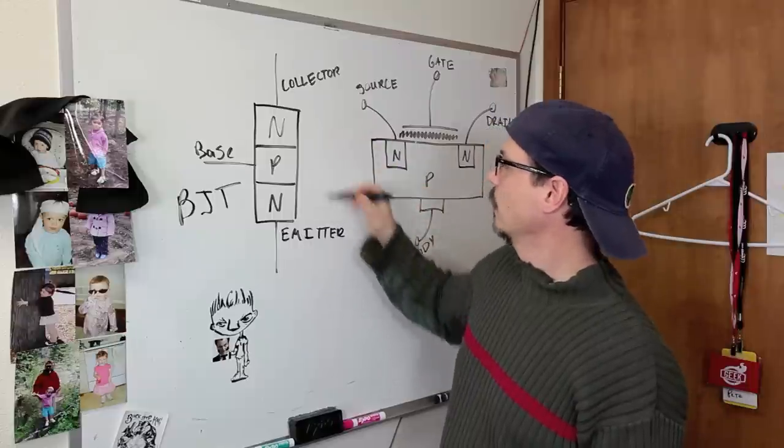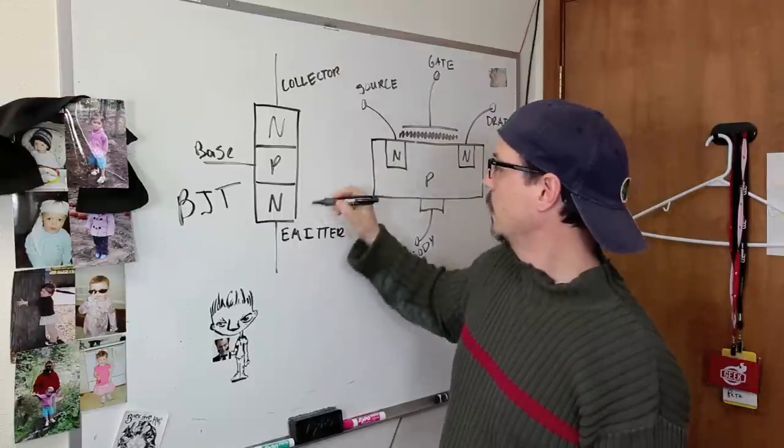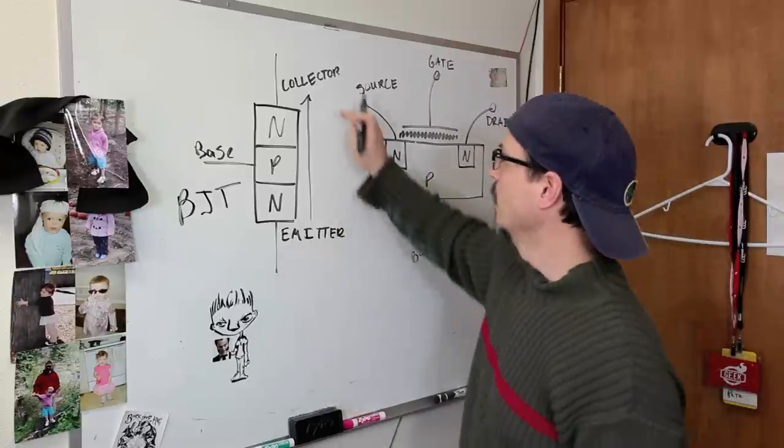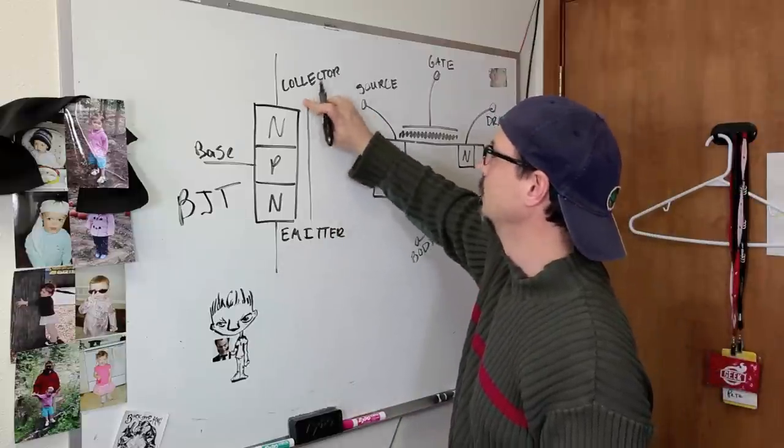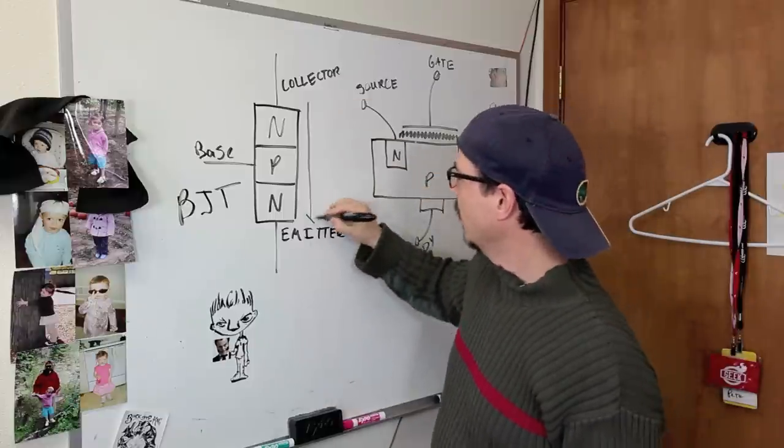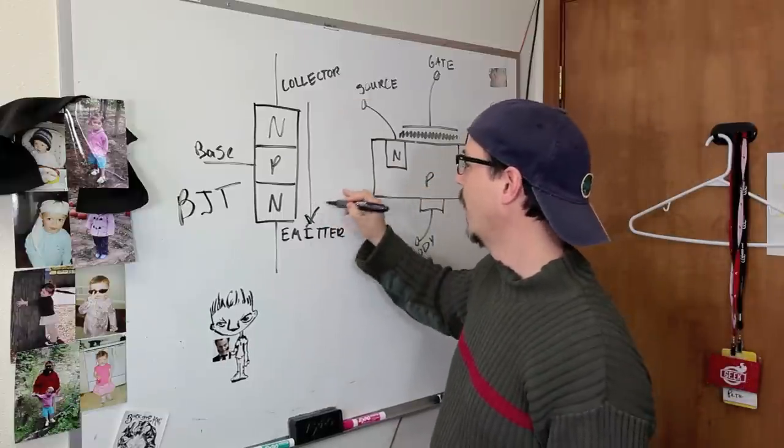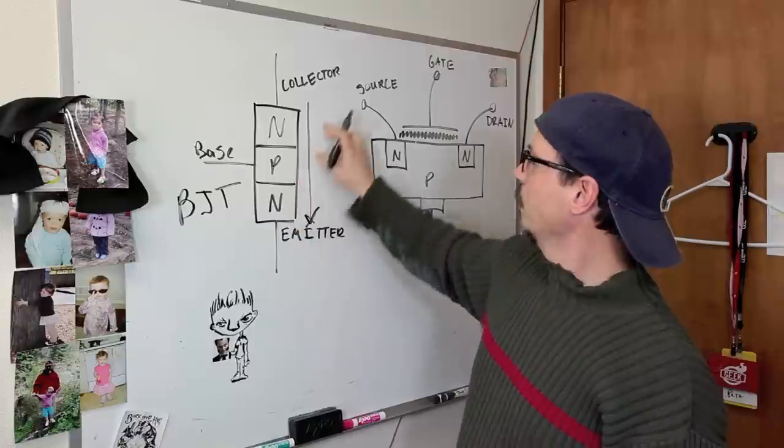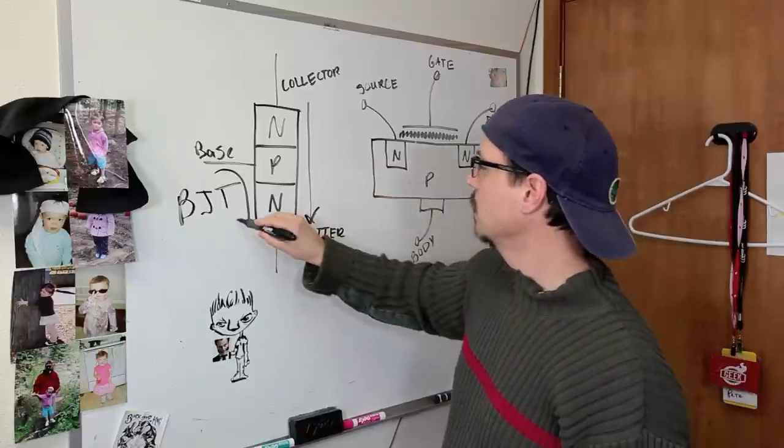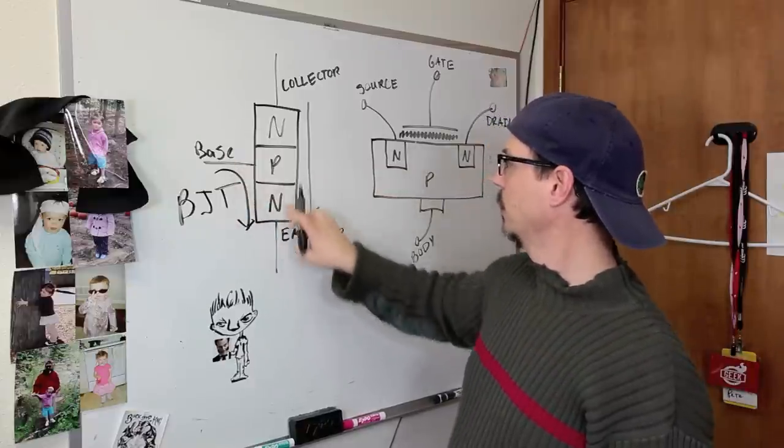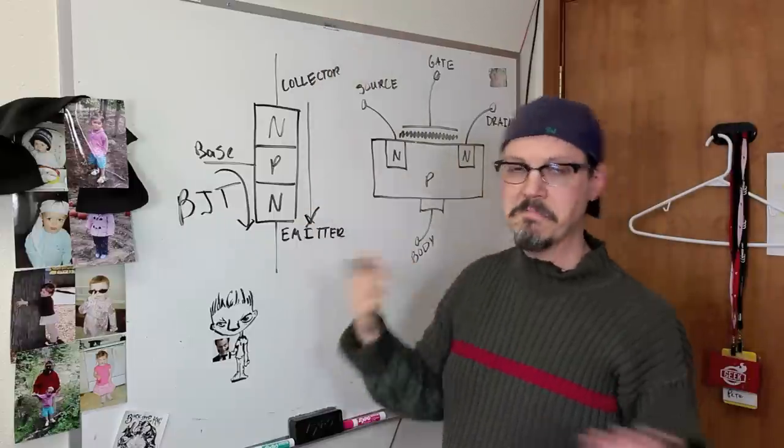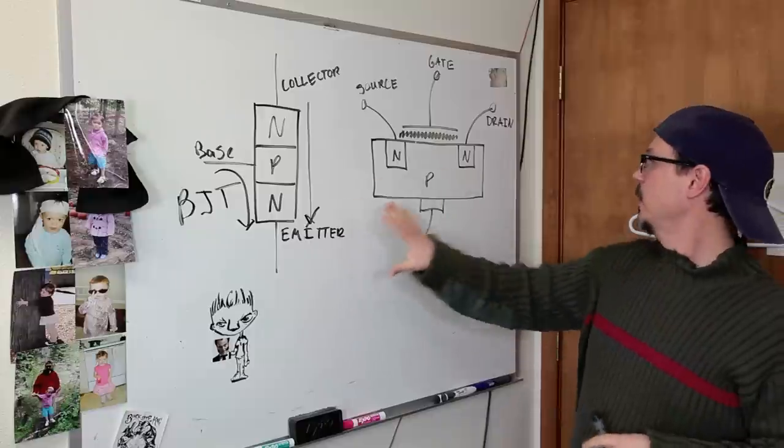And the gist of this, if you recall, is that in order to get current to go this way—you guys are going to bust me on conventional current flow versus electron current—conventional current flow is going to go that way. In order for that to happen, you've got to have a current running from base to emitter. Small current through this junction equals a large current through the whole device. Simple enough. So that's the BJT.